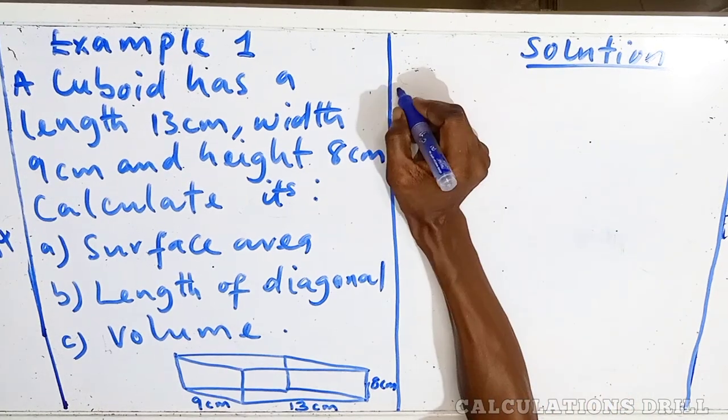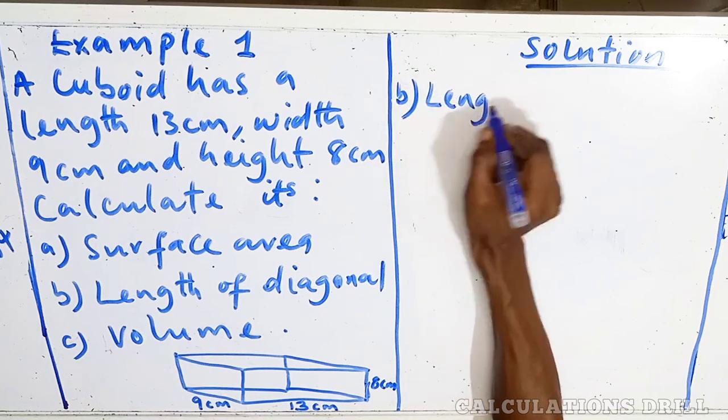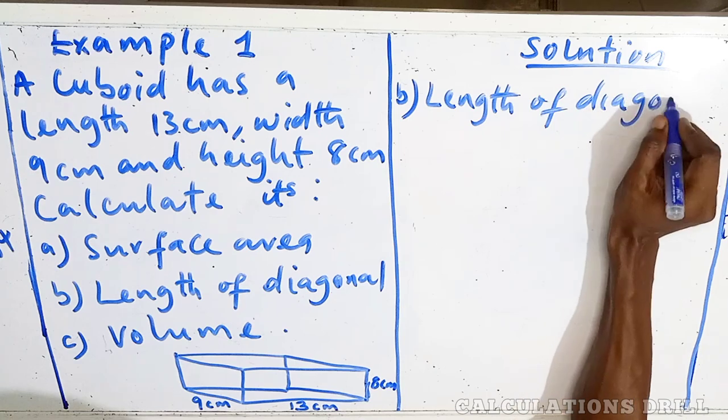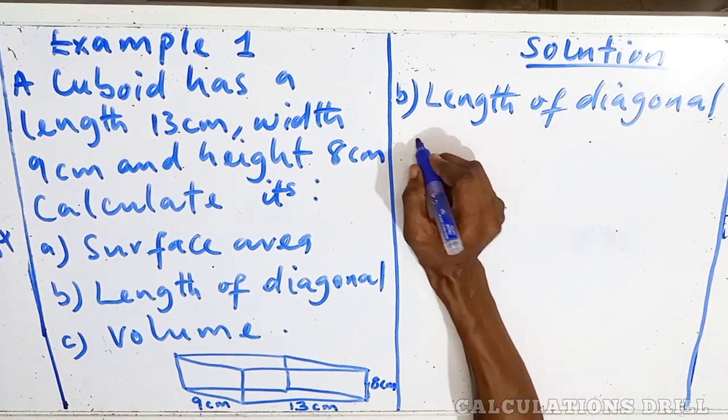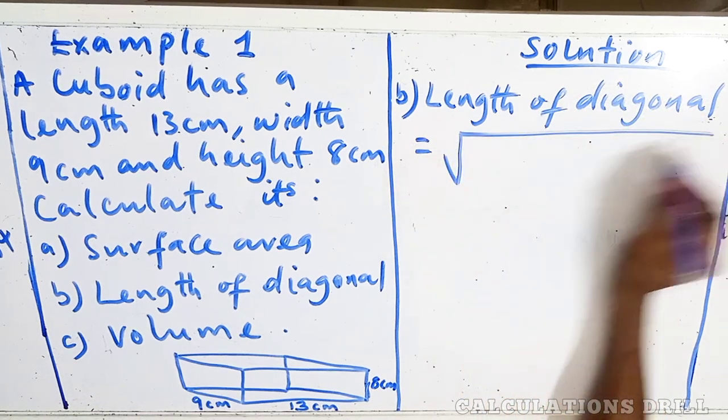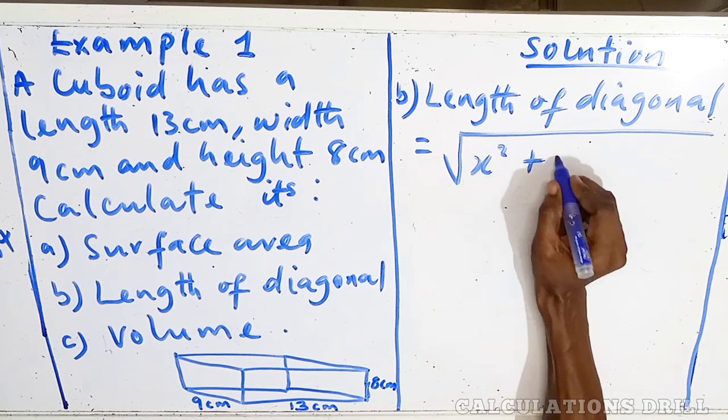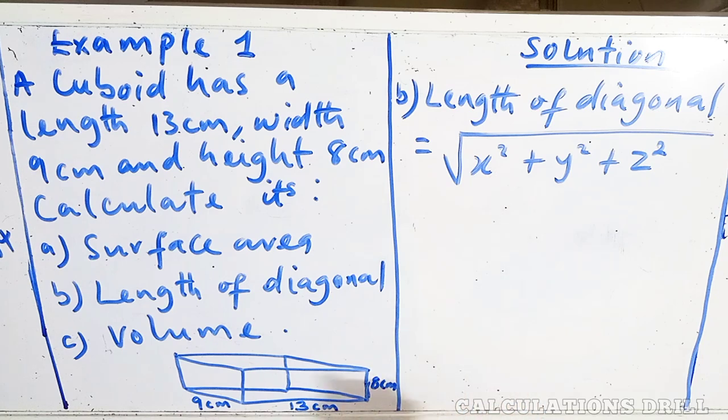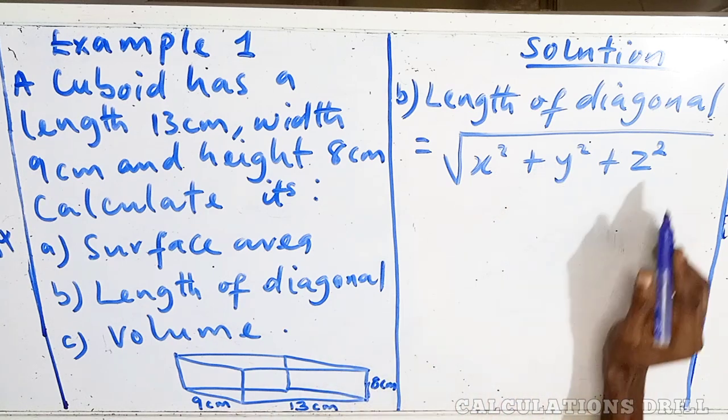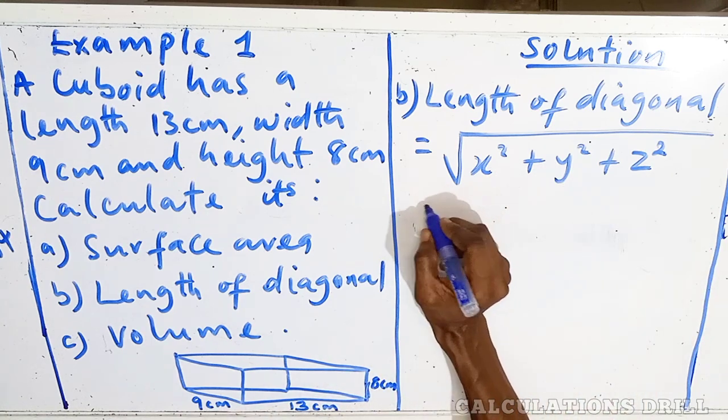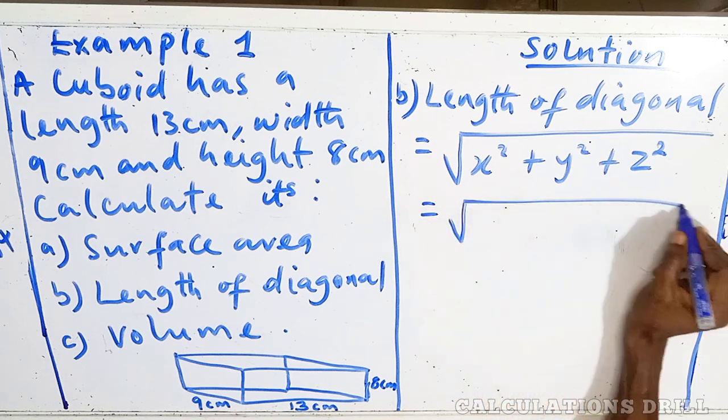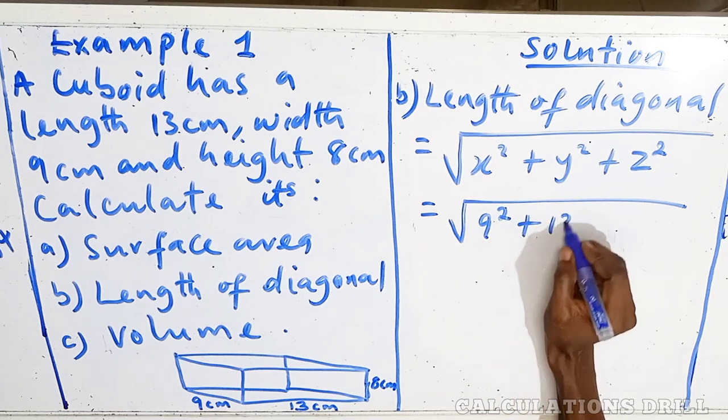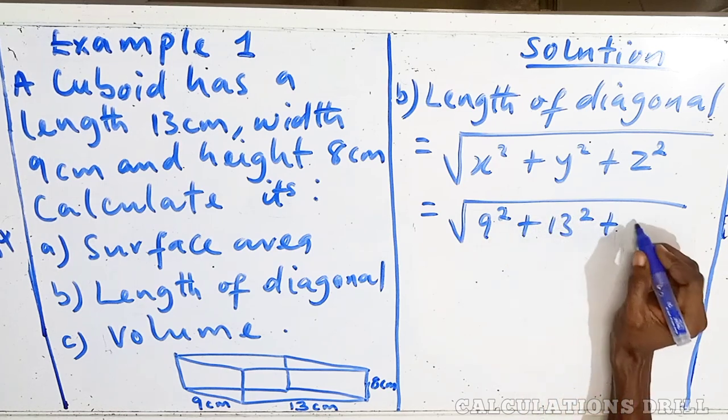Then, the second one, length of diagonal. That's what we are solving for now. And the formula is equal to square root of x² + y² + z². And we know the value of x, y, and z from the question.